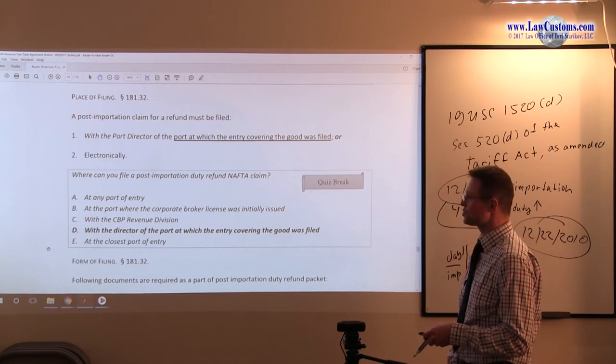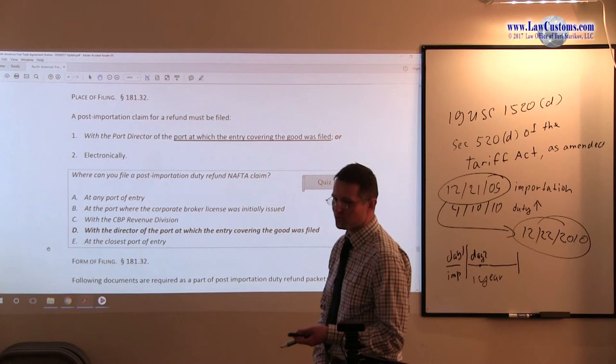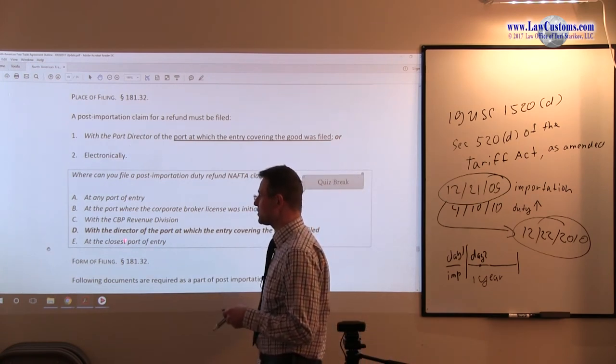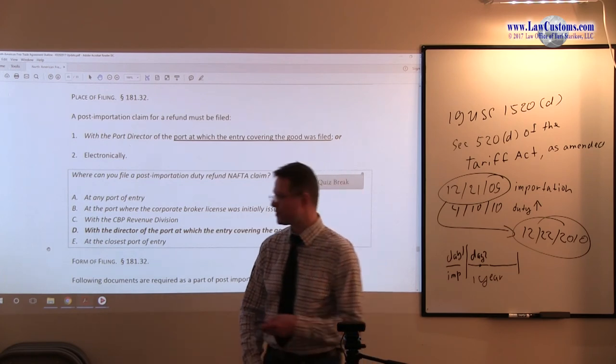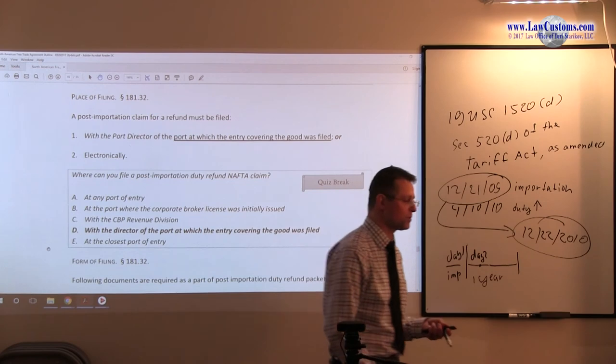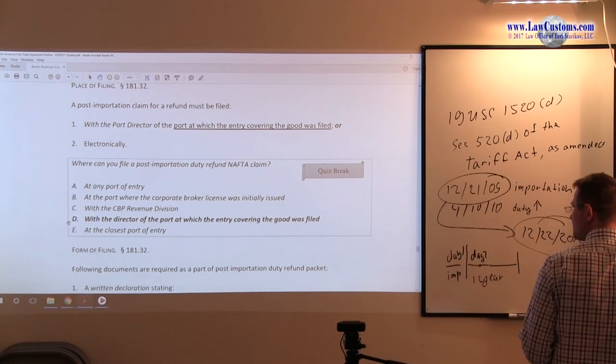So D is correct. At the closest port of entry, this is obviously incorrect. You cannot just pick and choose. Customs used to be port-driven, now it's electronic, but it's still not reflecting the electronic whatsoever. You stick with the port, the port where the entry was filed. D is the correct answer choice.